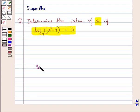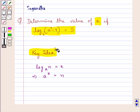We know that log of a number n to the base a is equal to x means that a to the power of x is equal to n. This is the key idea that we use for this question. Let's proceed with the solution now.